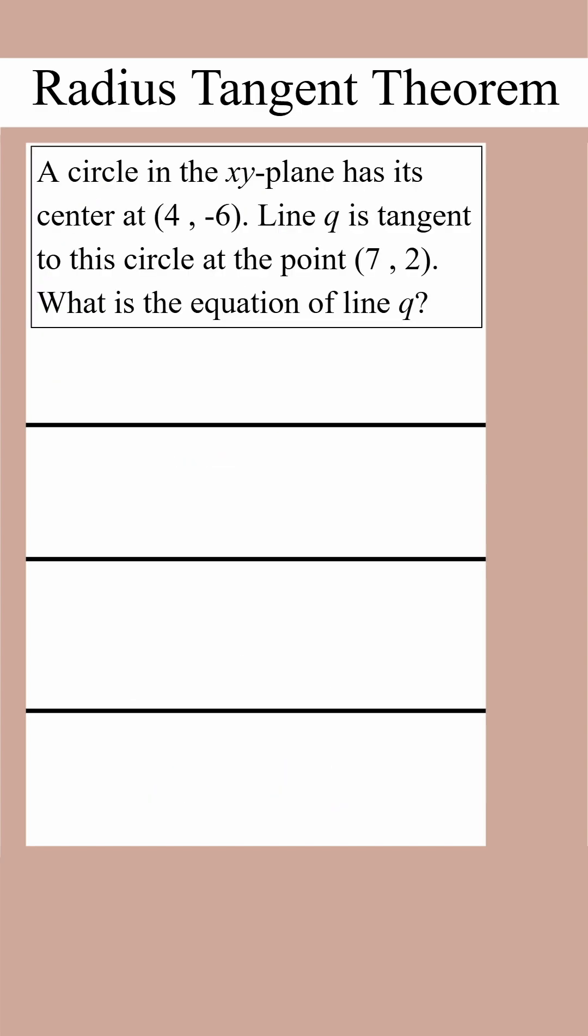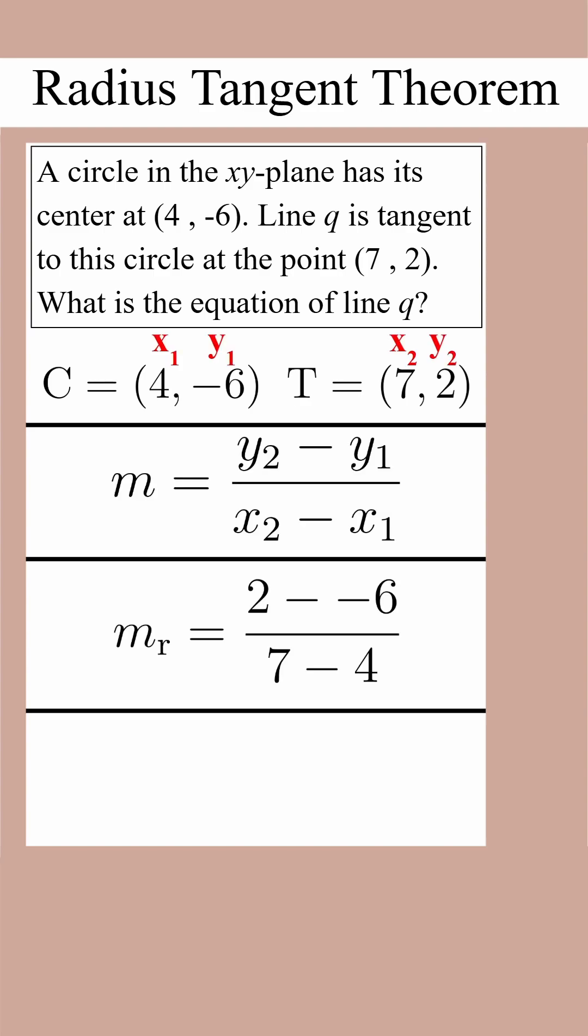In this problem, we're given the center and the point of tangency, but why don't we call those C and T, just like in our diagram. We can find the slope of the radius by using the slope formula on C and T, since the radius is formed by connecting C and T. If we use the slope formula, we should find that the slope of the radius is 8/3.